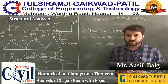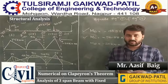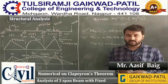Today we will see the numerical on Clapeyron's theorem — analysis of a 3-span beam with fixed support. Earlier in the classes we have covered the 2-span, 3-span, and 3-span having the overhang portion. According to this 3-moment theorem, we apply it to a 3-span beam. Today we will see what happens when the support system has a fixed support.